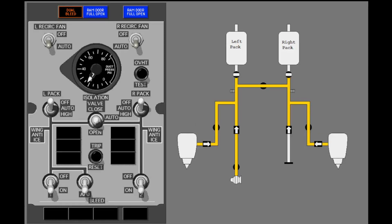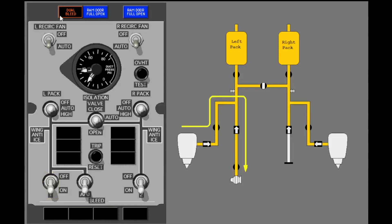When the engines supply bleed air, select the air conditioning packs to auto. When the left engine valve switch is on and the APU bleed valve is open, the dual bleed light illuminates. The dual bleed light shows that it is possible to back pressure the APU with engine bleed air.